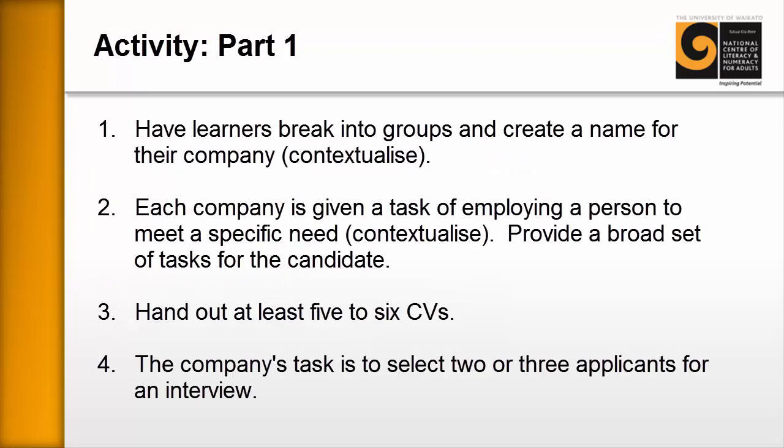Activity part one. The idea is to break learners into small groups, and those groups are going to be the learner's company. You let them come up with a company name, and this will be contextualized to your specific vocation. For example, if you're running a hairdressing course, then each of those companies might be in charge of their own franchise of salons, and they can come up with a really neat name that reflects their company.